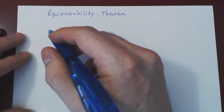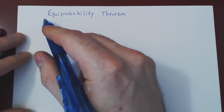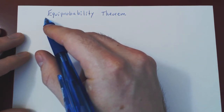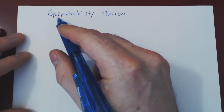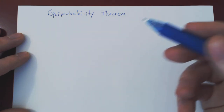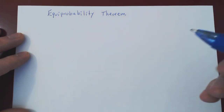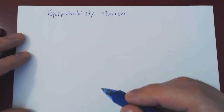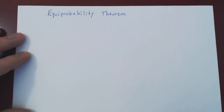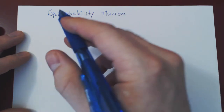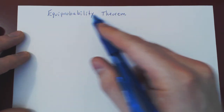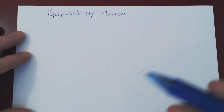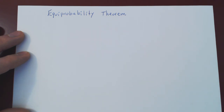In this video, we will introduce the so-called Equiprobability Theorem. As you will see, you already know this result intuitively. Let's derive this result intuitively through an example — a simple example of rolling a regular six-faced die.